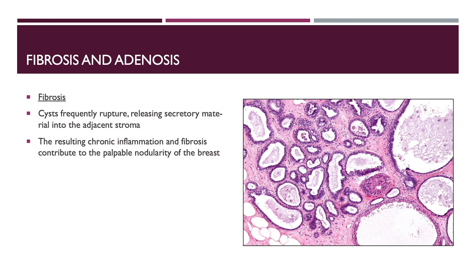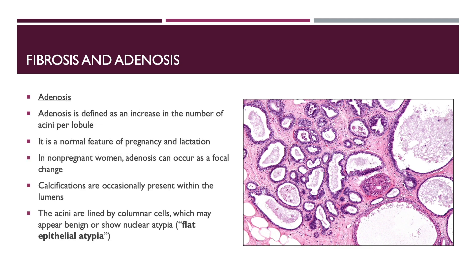Moving on to fibrosis and adenosis. Cysts frequently rupture, releasing secretory materials into the adjacent stroma. The resulting chronic inflammation and fibrosis contribute to the palpable nodularity of the breast. Adenosis is defined as an increase in the number of acini per lobule, which is a normal feature of pregnancy and lactation. In non-pregnant women, adenosis can occur as a focal change, and you can see the increased acini with the fibrosis around them. Calcifications are occasionally present within the lumens. The acini are lined by columnar cells, which may appear benign or show nuclear atypia called flat epithelial atypia.